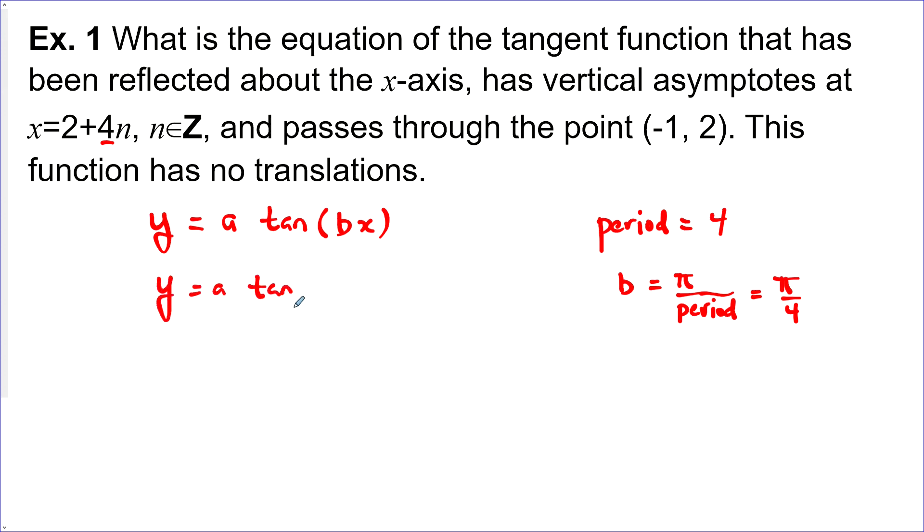Next, we need to find our a value by using this point that's given. So let's put negative 1 in here for x and 2 in here for y. Now, tan at negative pi over 4 is just negative 1. And so a is equal to negative 2. That means our function here will be y equals negative 2 tan pi over 4 x.